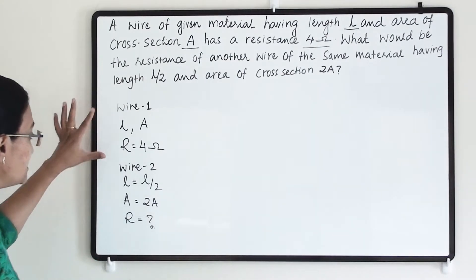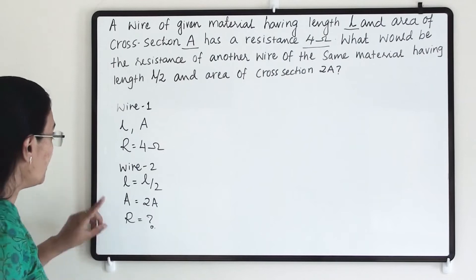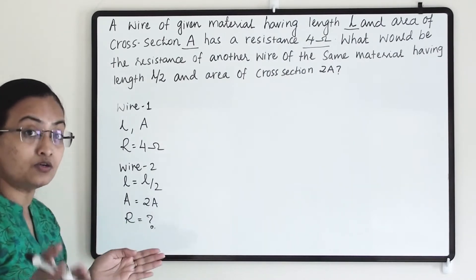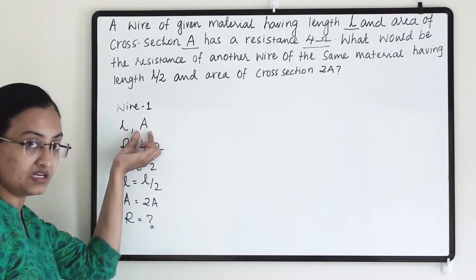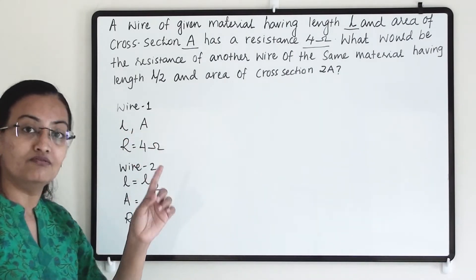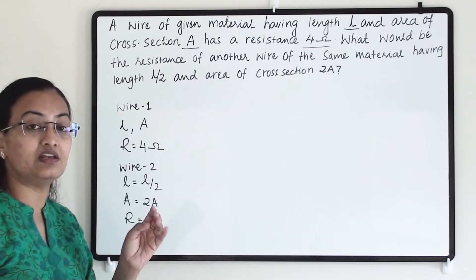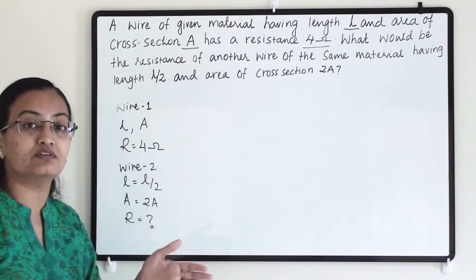Here material will remain same. So if we are taking another piece of wire of same material, same length, and same area, then the resistance will remain same because material, length, and area of cross section, everything is similar.